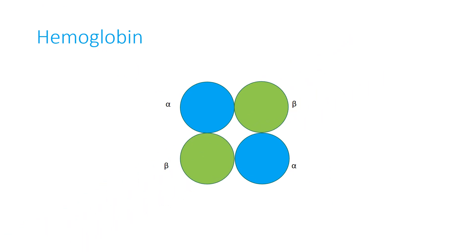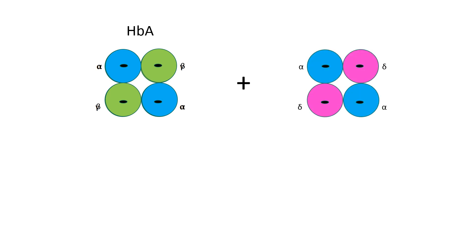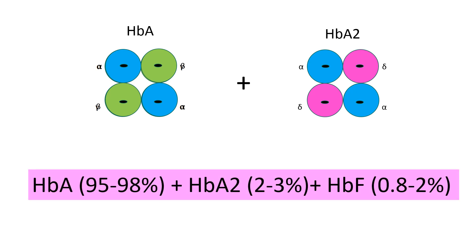To recapitulate, hemoglobin is a tetrameric protein with 4 globin polypeptide chains, each associated with an iron protoporphyrin 9 group called heme. Fetal hemoglobin or hemoglobin F is comprised of alpha2 gamma2, which by the age of 6 months is replaced to quite an extent by alpha2 beta2, i.e. hemoglobin A, present along with alpha2 delta2, i.e. hemoglobin A2. The composition of hemoglobin in a normal adult is hemoglobin A 95–98%, hemoglobin A2 2–3%, and hemoglobin F 0.8–2%.